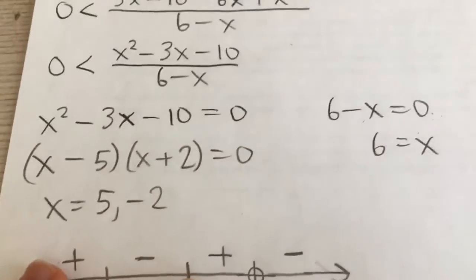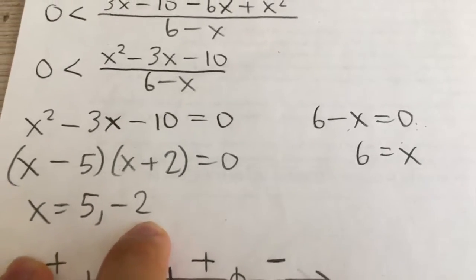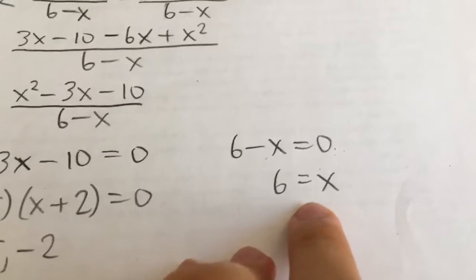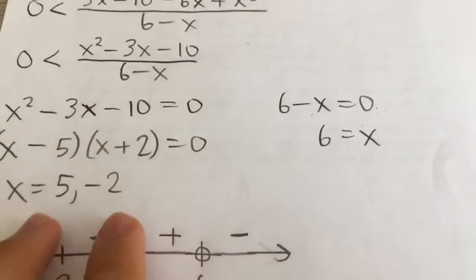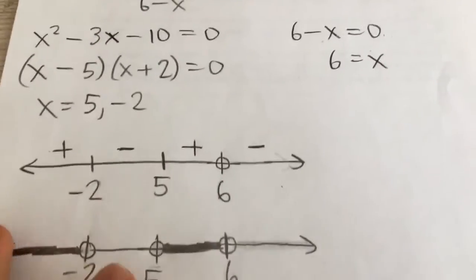So if we set the numerator equal to 0, we can factor it, and we'll get x equals 5 and negative 2. And the denominator would just add x to both sides. And so 6 equals x. And so we have three numbers, negative 2, 5, and 6, that we're all going to plot on a number line.